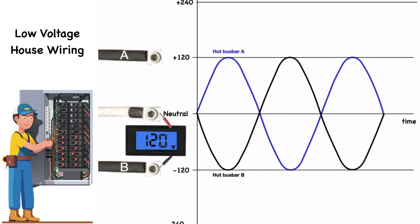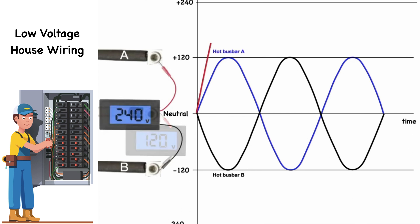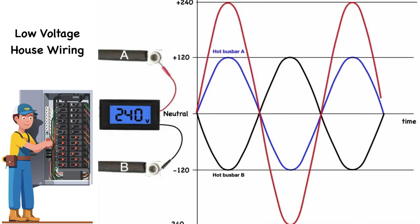That means if we take the measure of the potential difference between the two hot terminals, the result would look like this. This is the potential difference between the two hot terminals A and B with respect to each other. As you see, it rises to a maximum of 240 volts positive, then returns to 0, and goes to minus 240 volts and back to 0, and repeats itself. It will do this 60 times a second.